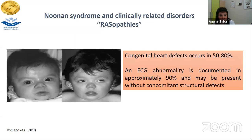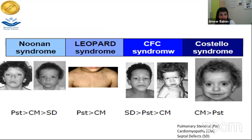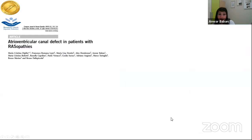Genotype-phenotype correlation in Noonan syndrome is not straightforward, especially for very recently described forms. Generally, in Noonan syndrome we see more pulmonary stenosis than septal defects, while in Costello we see more cardiomyopathy compared to pulmonary stenosis — however there is very high variability. In our group we have described several patients with atrioventricular canal in RASopathies.